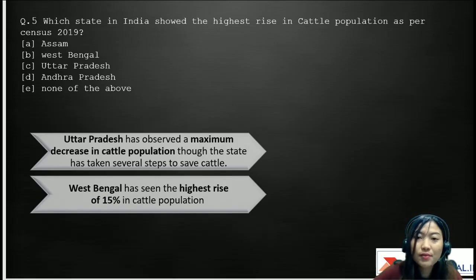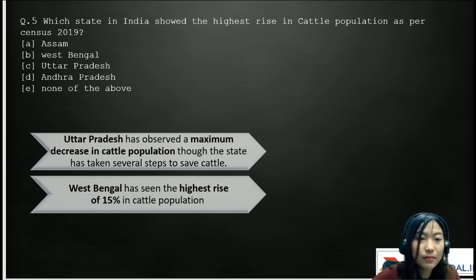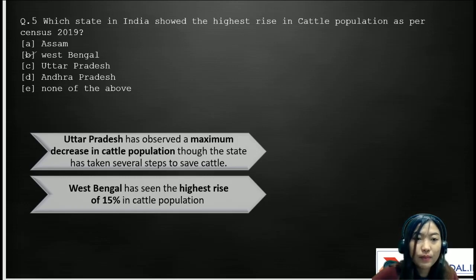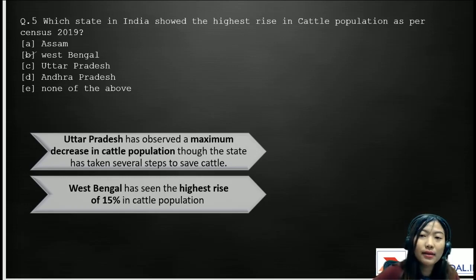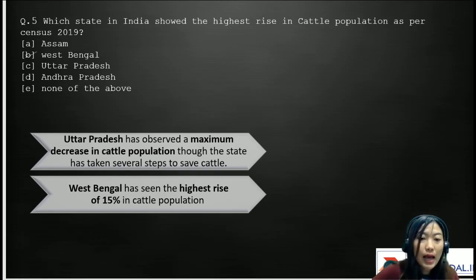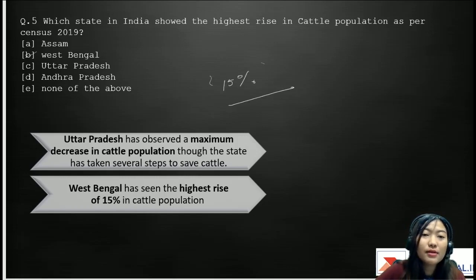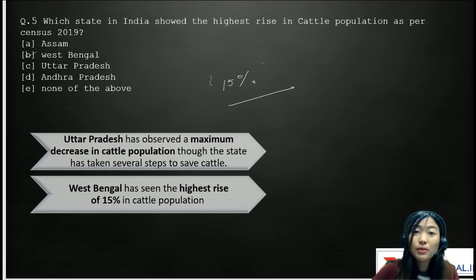Last question: which state in India showed the highest rise in cattle population as per the census of 2019? Options are A. Assam, B. West Bengal, C. Uttar Pradesh, D. Andhra Pradesh, E. None of them. The correct answer is West Bengal, which showed the highest rise in cattle population — a rise of about 15%. Uttar Pradesh, on the other hand, showed a decrease in cattle population.